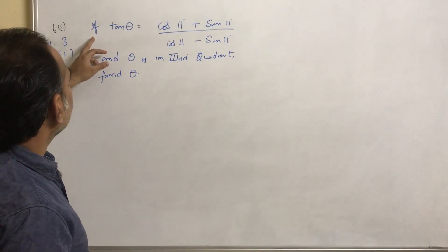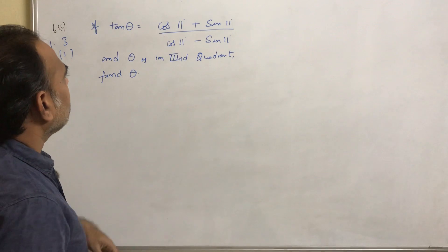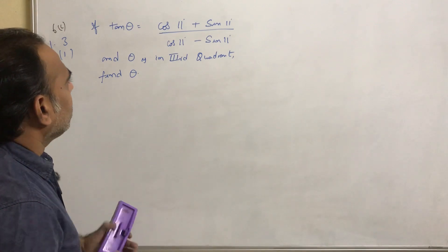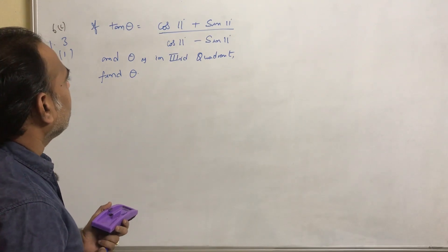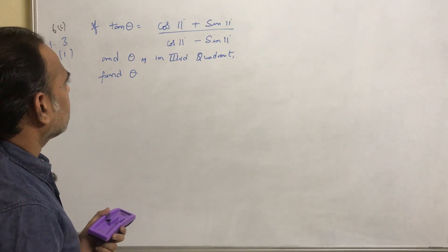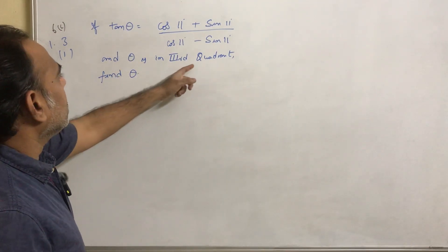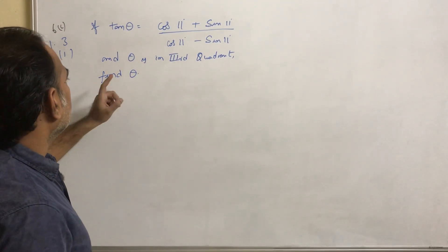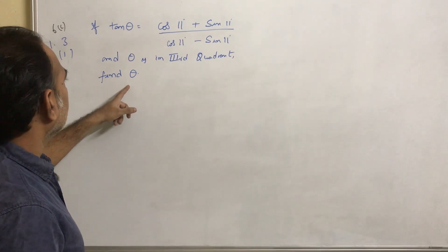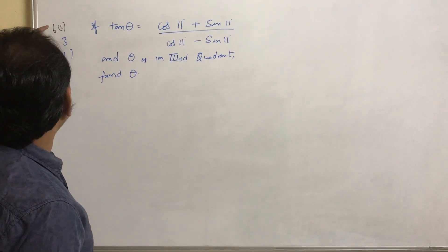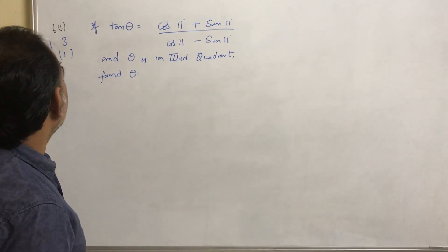Today we will see this problem. If tan theta equals cos 11 degrees plus sin 11 degrees divided by cos 11 degrees minus sin 11 degrees, and theta is in the third quadrant, then find theta. This problem is from 6C131.